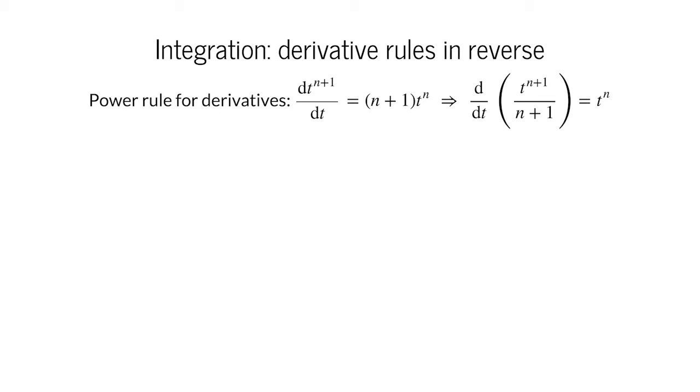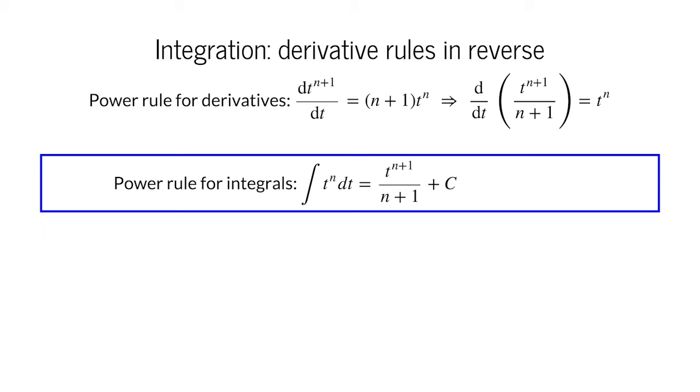Now we have a differentiation rule that gives us t to the n as the derivative. We are all set to reverse the rule and obtain the integration rule for t to the n. If we undo the differentiation of t to the n, we must have differentiated t to the n plus 1 divided by n plus 1. Thus, the integral of t to the n dt is t to the n plus 1 divided by n plus 1, plus our ubiquitous constant c.